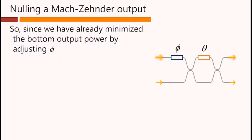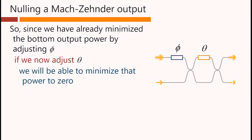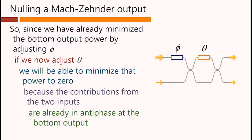Since we have already minimized the bottom output power by adjusting phi, if we now adjust theta, we will be able to minimize that power to zero, because the contributions from the two inputs are already in antiphase at the bottom output, and it's always possible, therefore, to find some ratio of these two contributions that is exactly equal and opposite.